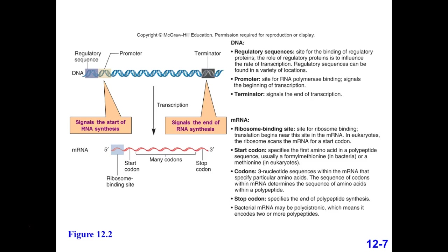The ribosome binds at the ribosome binding site but doesn't start translating into protein right away. First it binds, then it starts moving along, grasping onto the messenger RNA. It's not going to start putting amino acids together until it reaches a specific code within the messenger RNA. This is a three-letter code that is the same in prokaryotes, eukaryotes, and all organisms. It is the code AUG — it is called the start codon.